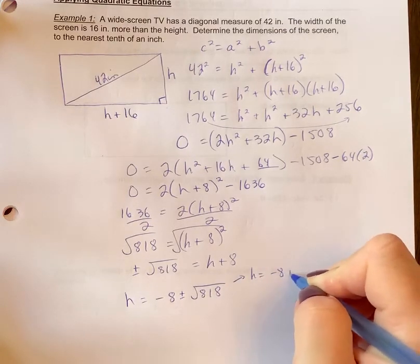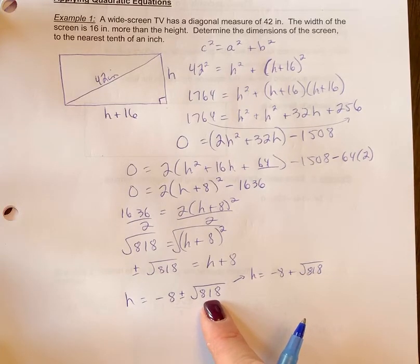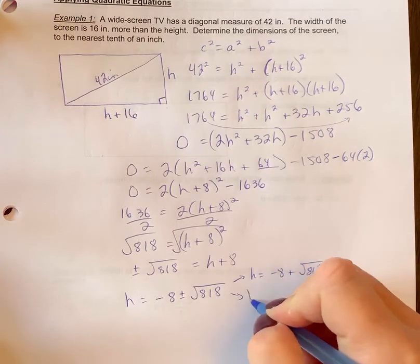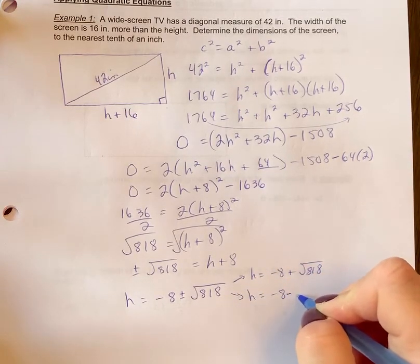So here's a situation you need your approximate values. So h would equal negative 8 plus the square root of 818. And I don't need to worry about simplifying this. If you were thinking, oh, I need to find perfect square factors, you don't need to on a word problem here. If you're asked for the approximate values, we're just going to put all this into the calculator anyway.